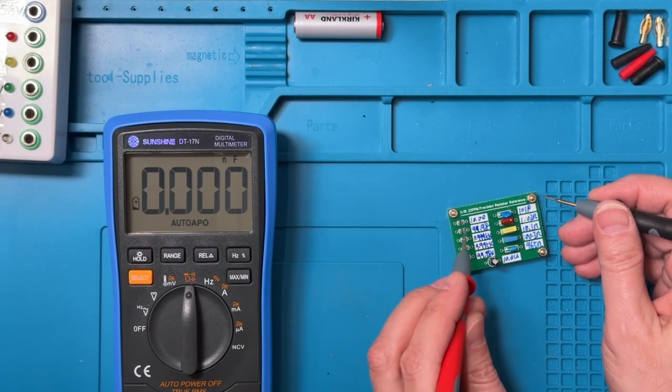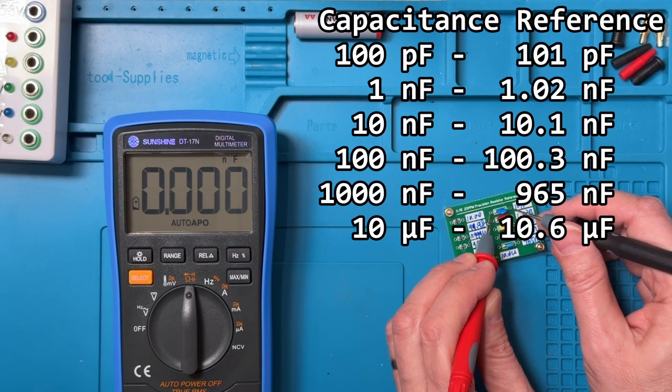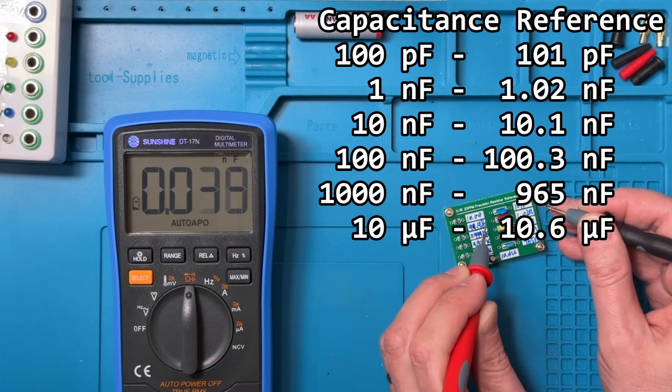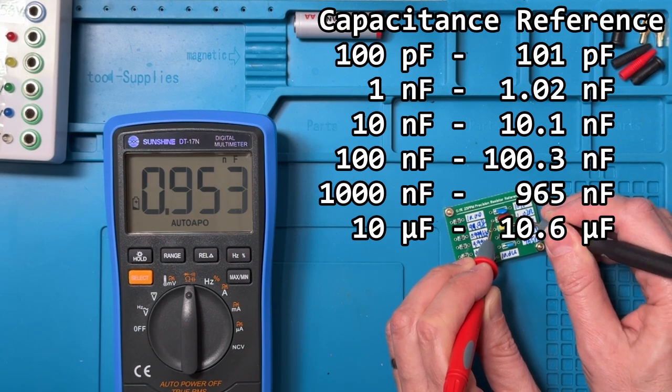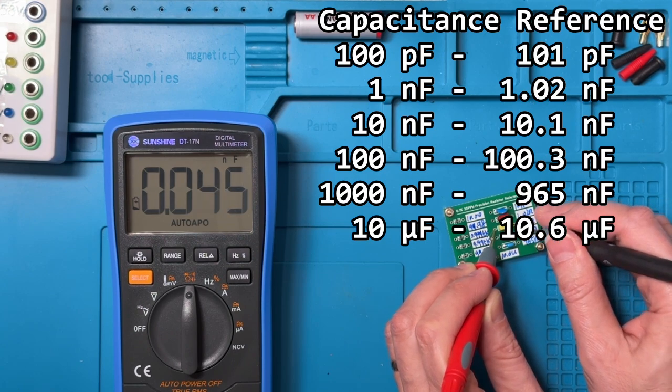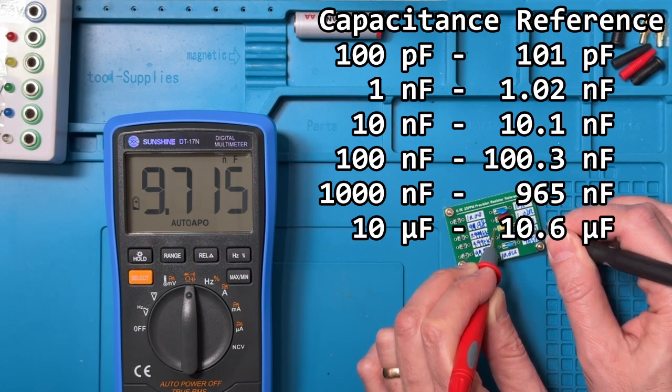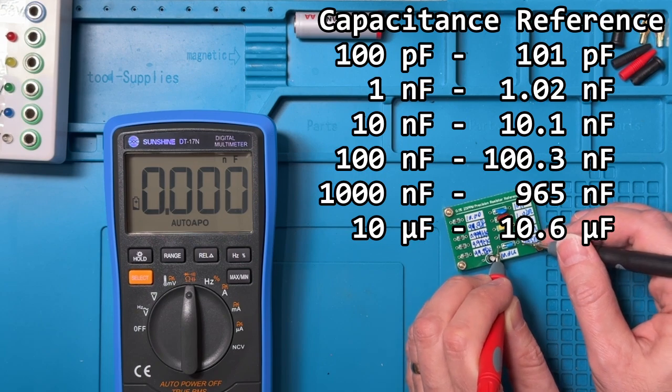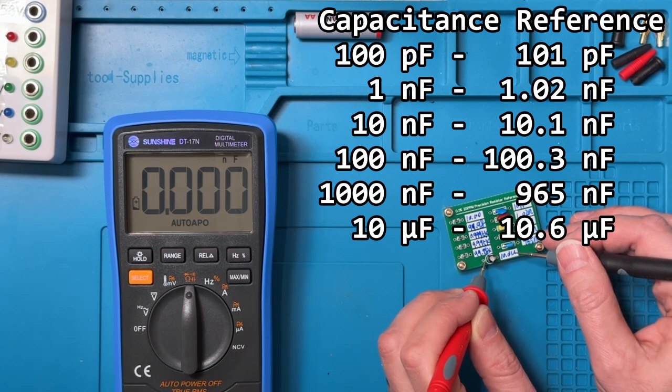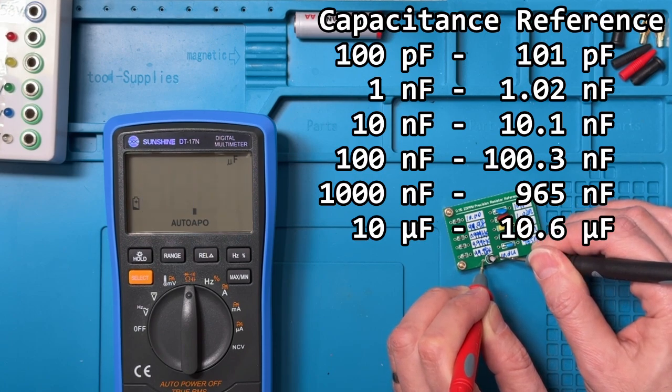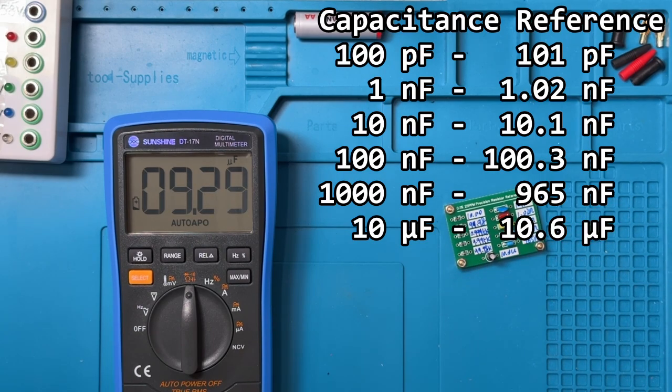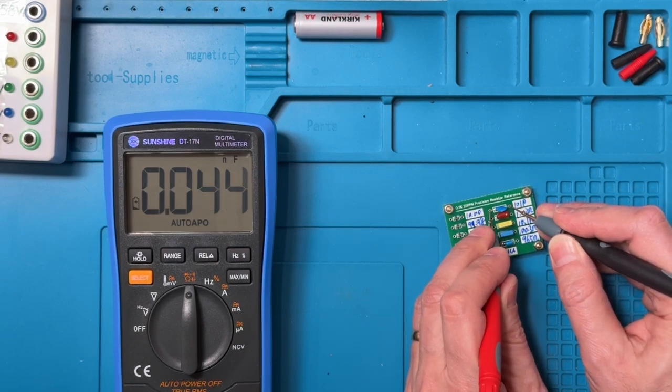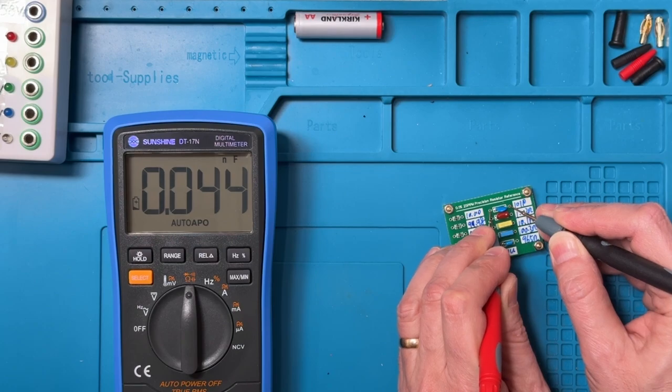Looking at capacitance, the values from the reference will be up in the overlay and I'll just call these out again. 100 picofarads, so that's pretty far off. This is 1nF. This is 10nF. 100nF. 1000nF. And 10 microfarads. So the readings there were pretty good, except it does seem to have some trouble at the lower end with the 100 picofarad. So that might be out of the range for this particular meter.